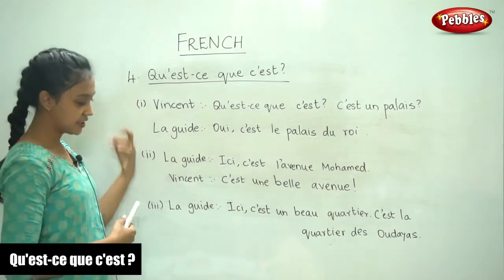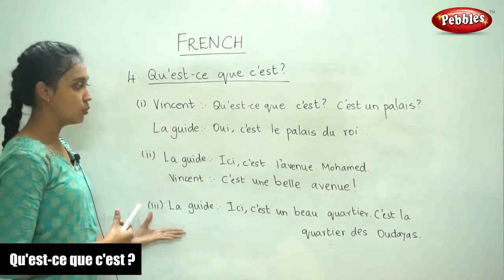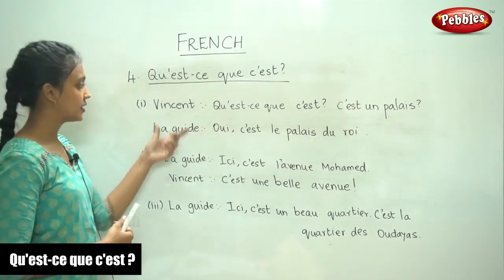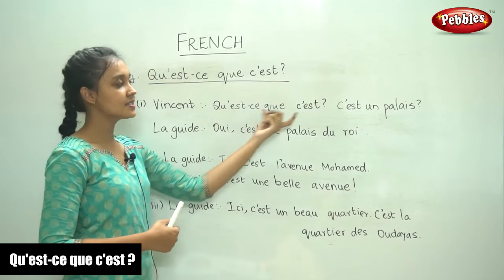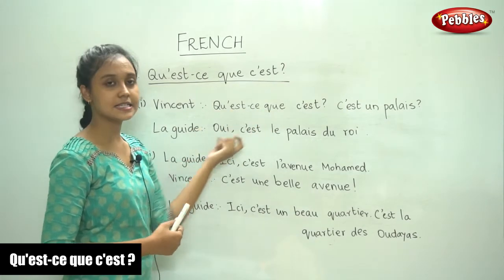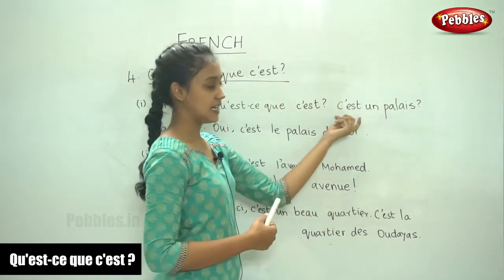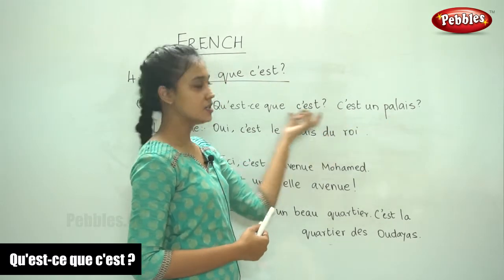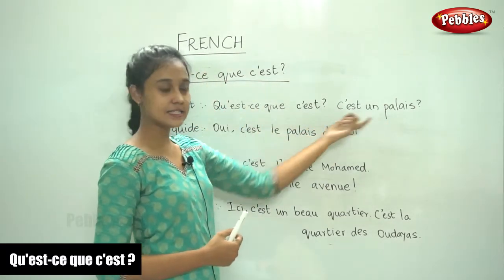I have written down a conversation which we are going to try and translate. Vincent says 'Qu'est-ce que c'est?' — What is this? The reply is 'C'est un palais' — It is a palace. So what is it? Is it a palace?